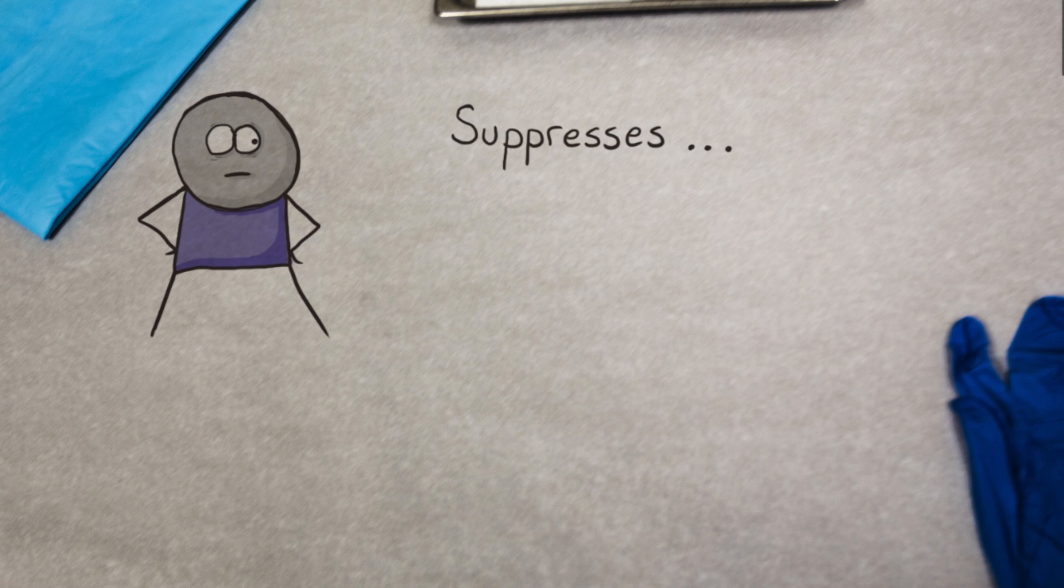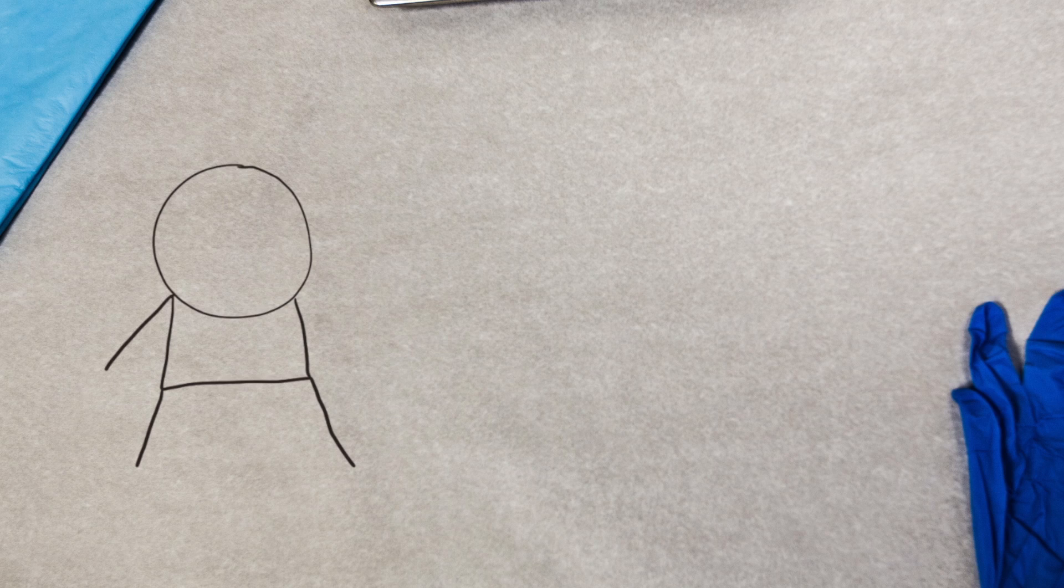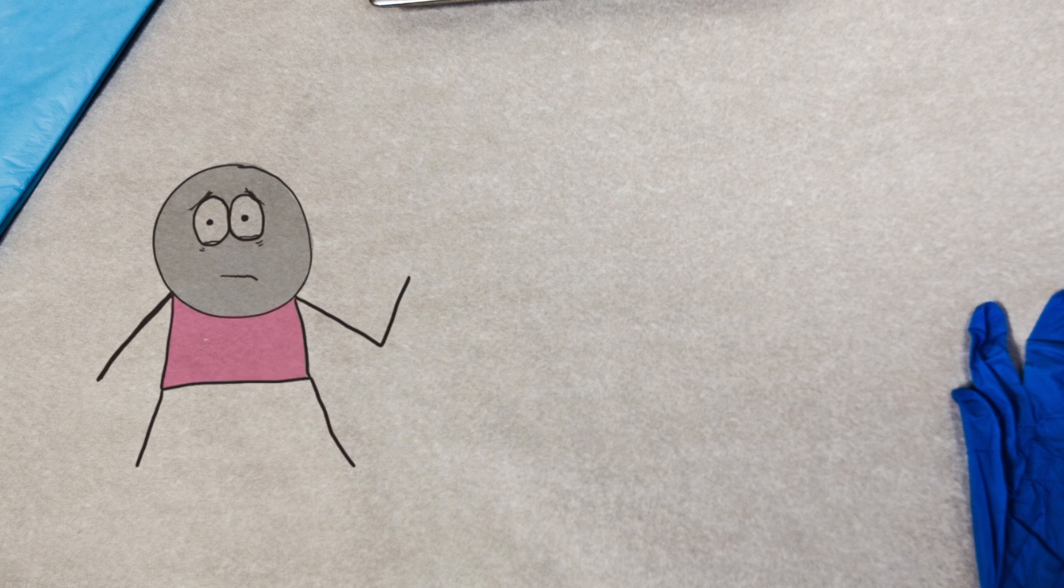It also suppresses other activities that aren't vital in the immediate stressful situation, like the immune system. And that is the main role of the cortisone shot. It is an immune suppressant, or an anti-inflammatory.